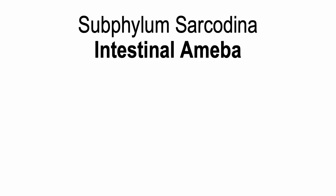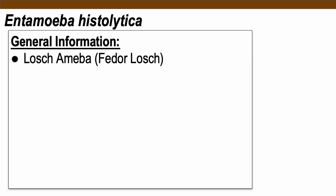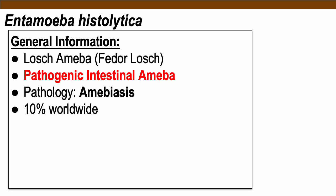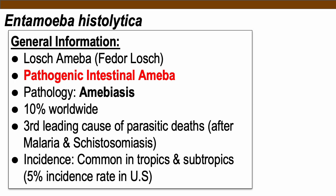Let's start with the intestinal amoeba, beginning with Entamoeba histolytica — the only pathogenic amoeba among all intestinal parasites. Also known as the Losh amoeba, named after discoverer Fedor Losh, this is the only pathogenic intestinal amoeba. It causes amoebiasis and contributes to 10% of parasitic cases worldwide. It is the third leading cause of parasitic deaths after malaria and schistosomiasis. In the U.S., the incidence rate is approximately 5%.